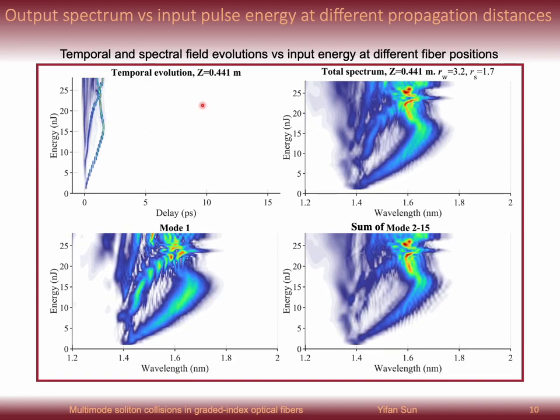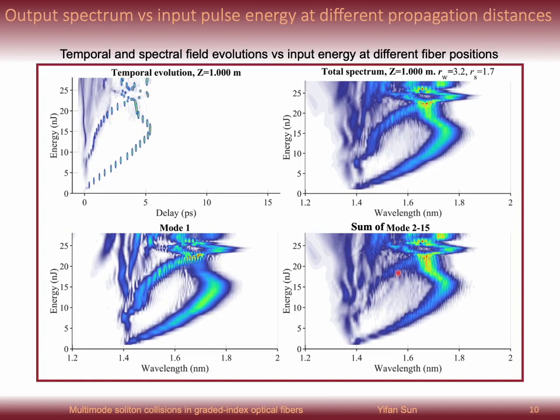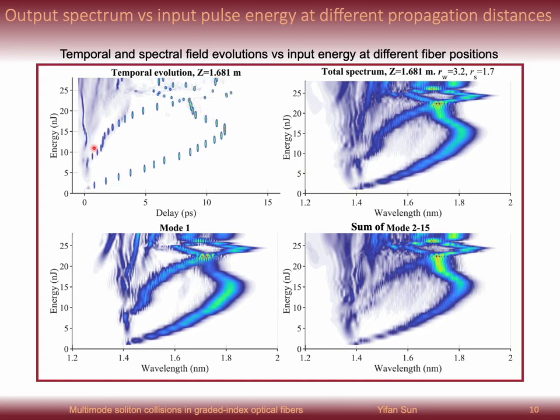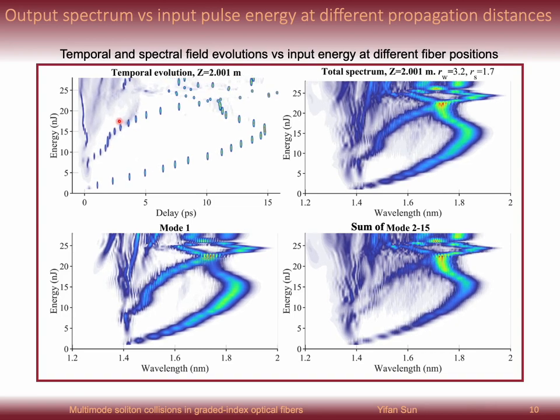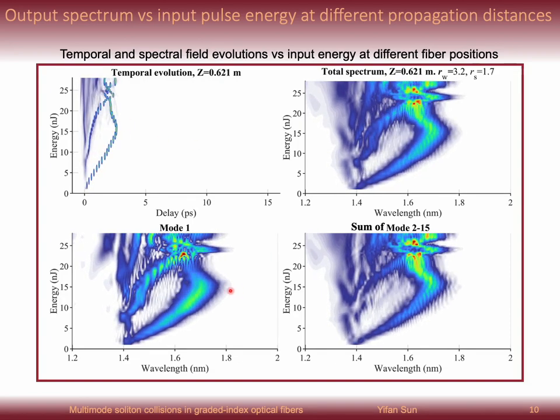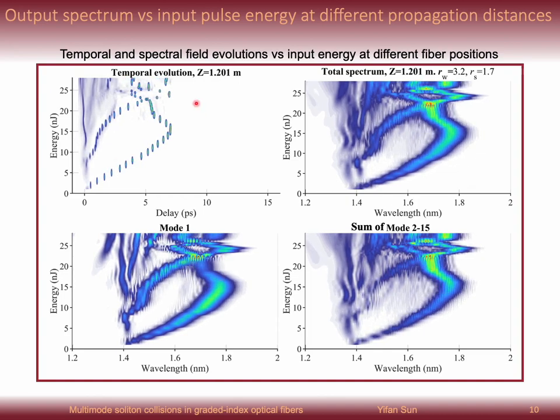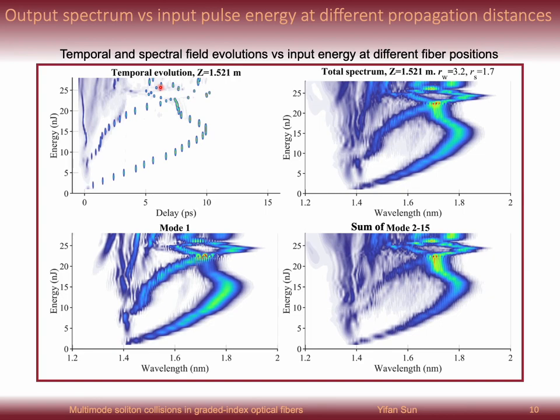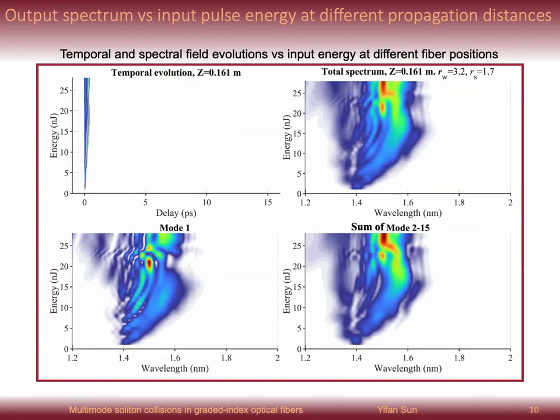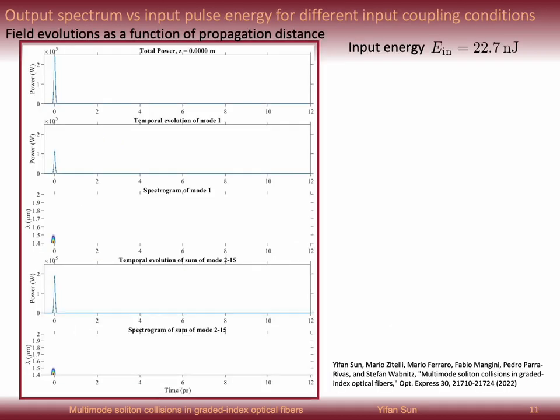Here on the top two figures, I show you a visualization of the temporal and spectral field evolution versus input energy at different fiber positions. And the bottom two figures are the spectral mode 1 and sum of other modes. What you clearly see is the energy region between 15 and 22. As energy increases, the trailing soliton which is on the right exhibits less group delay and less redshift. This is because the energy of the fundamental mode in trailing soliton here decreases, which reduces the nonlinearity. At the energy region between 22 and 25, we can find such a region where temporal soliton overlap occurs. So now the question is, if we fix the input energy here, how does the field evolve in different positions of the fiber?